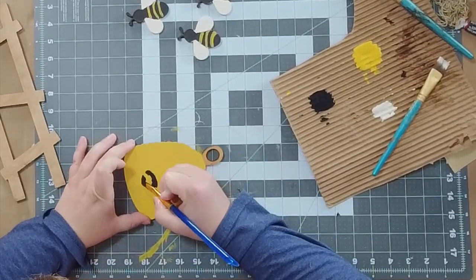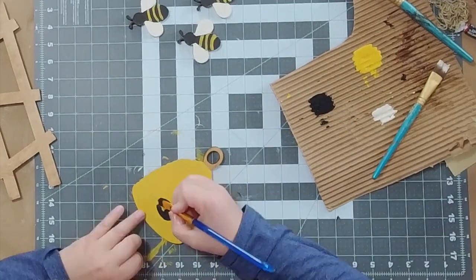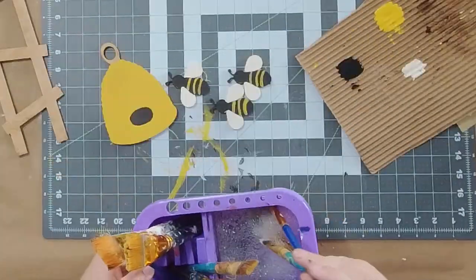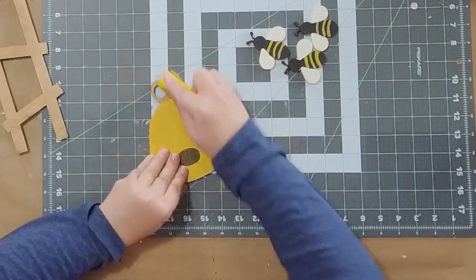Then we're going to come over here and add the little circle to the middle of the beehive. Again, there's an engraving on this, so you can follow along.